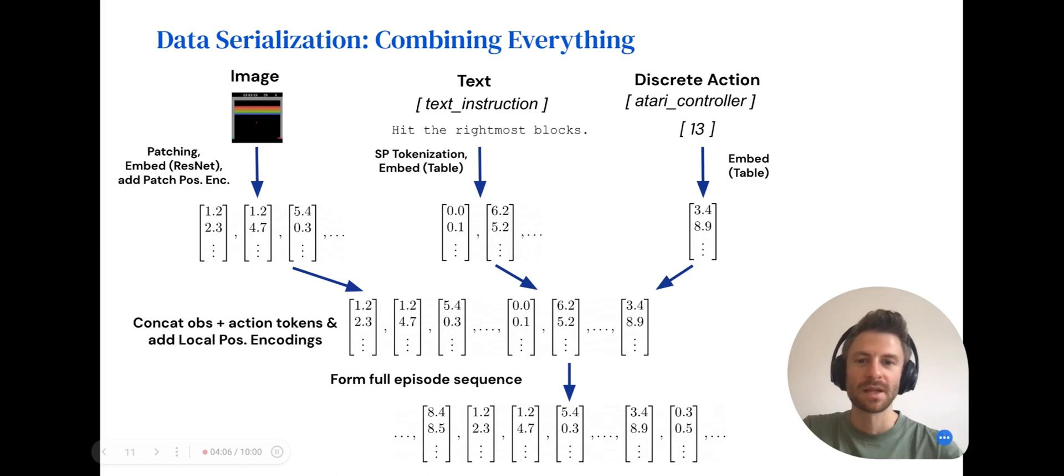Finally, here's an example where we have image, text observations, and discrete actions. Let's see how things are put together. All the observation embeddings are concatenated first before being concatenated with the action embeddings. Finally, a full episode sequence is constructed by repeating this process for each time step.